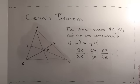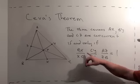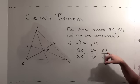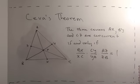The three cevians, AX, BY, and CZ are concurrent if and only if BX over XC times CY over YA times AZ over ZB equals 1.